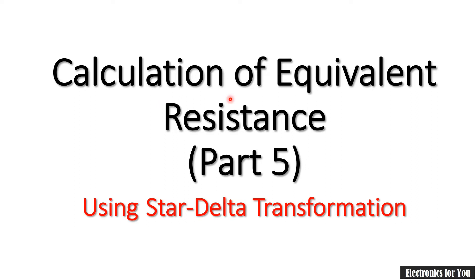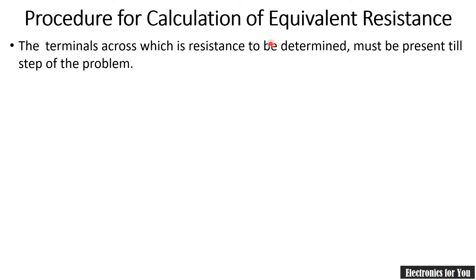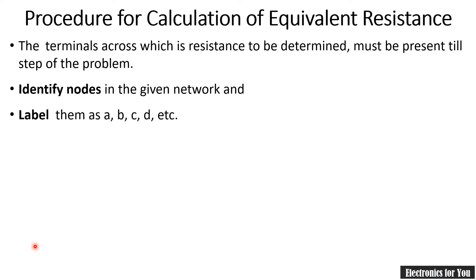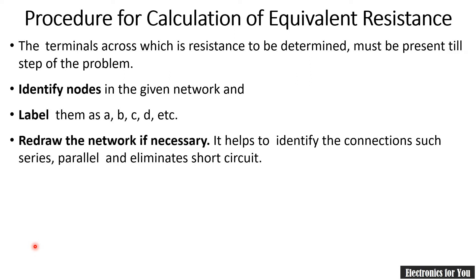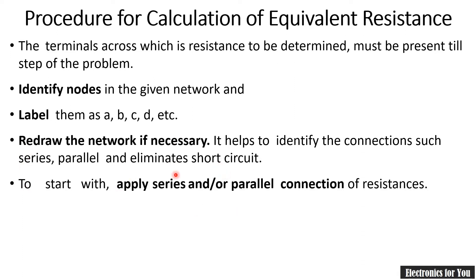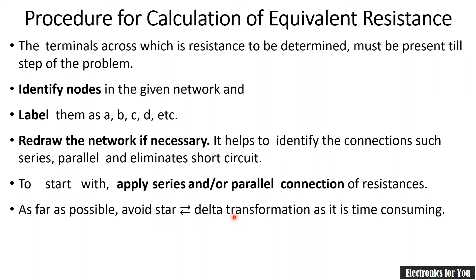This is part number five for the calculation of equivalent resistance. The procedure has already been explained in our previous two videos. Step one is to identify the nodes for the given network, then label them, and redraw the circuit if necessary — that step is not compulsory but helps simplify complex circuits. Next, solve series and parallel combinations. Avoid star-delta transformation as far as possible; use it only when necessary.